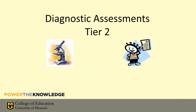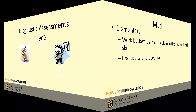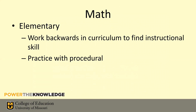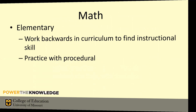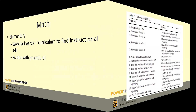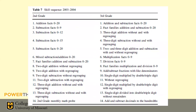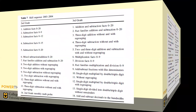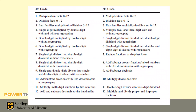What matters most in an effective tier two system is identifying what the kid actually needs through diagnostic assessment. In math, that generally involves working backwards in the curriculum to find the instructional skill level. We take a skill sequence — one that Amanda VanDerHeyden and I developed in a study a few years ago — and here's a sequence for second and third grade and fourth and fifth grade.